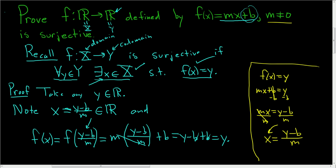We started with a y in the codomain. We showed there existed an x in the domain such that f(x) equals y. This shows that f is surjective.